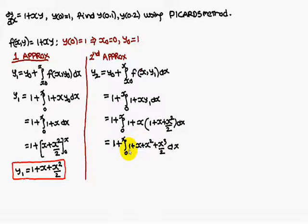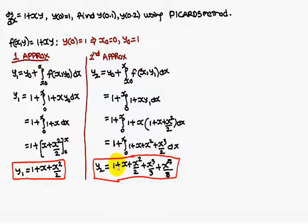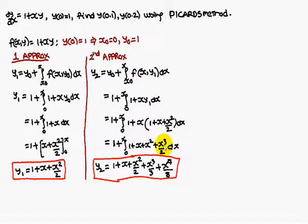If you simplify, you are going to get: 1 plus the integral of 1 gives x; integral of x gives x²/2; integral of x² gives x³/3; and the next term gives x⁴/8.